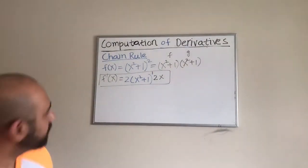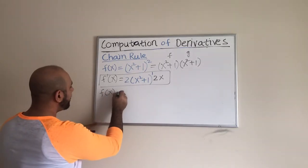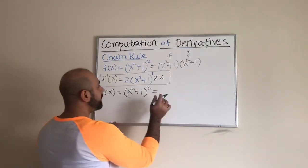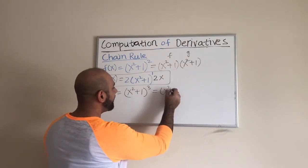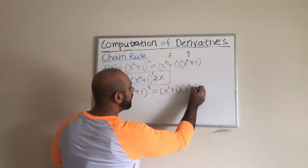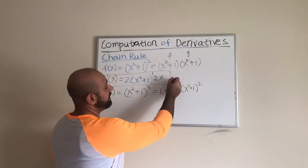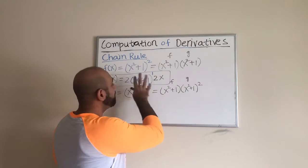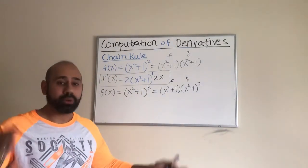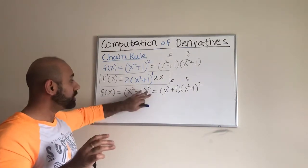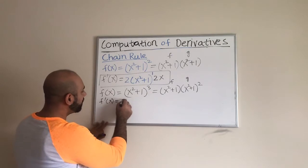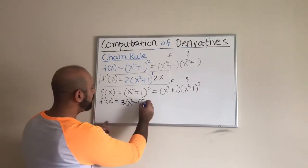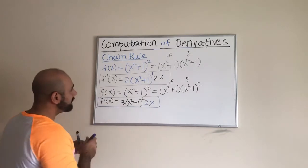Now let us move on to a different function: f(x) = (x² + 1)³. Again, we haven't established the chain rule, so one of the ways is to rewrite this as (x² + 1)(x² + 1)², treat each part as f and g, and use the product rule combined with the power rule to get the final derivative. Once we do that, we get 3(x² + 1)² times 2x.